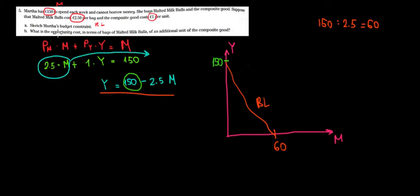Now, the second question is, what is the opportunity cost in terms of bags of milk of an additional unit of composite good? What is an additional unit of composite good? Well, that is our slope. What does the slope show? It shows us if we want an additional, so the slope shows us the change in y relative to the change in m, meaning that if we want an additional bag of milk, if milk increases by one unit, the composite good has to decrease by 2.5 units.